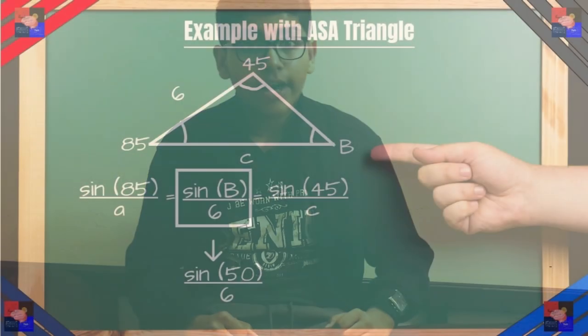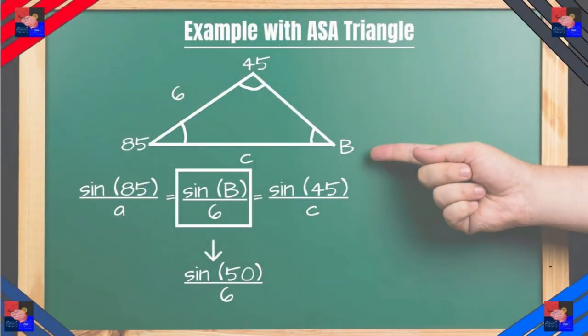But what if the side we know is in between the angles we know? Let's look at this triangle. In here we can plug in sine of 85 degrees over A is equal to sine B over 6 which is equal to sine of 45 degrees. And using again all angles add to 180 degrees in the triangle we get sine of 50 over 6 and we use the ratio again to solve for this. So that's side angle angles.